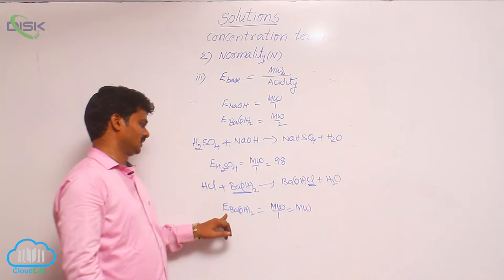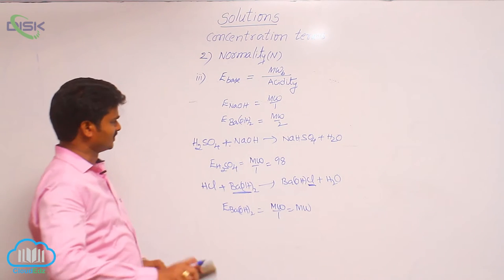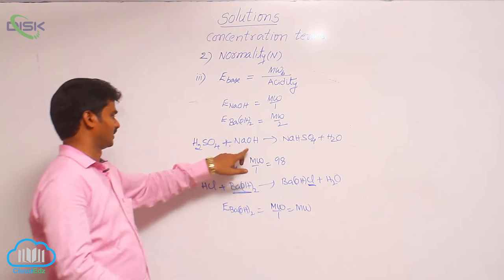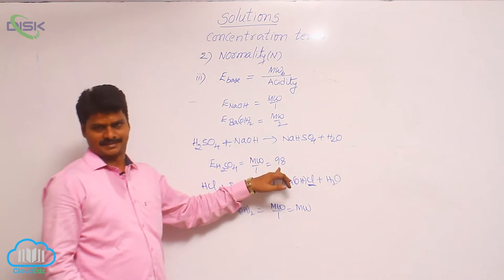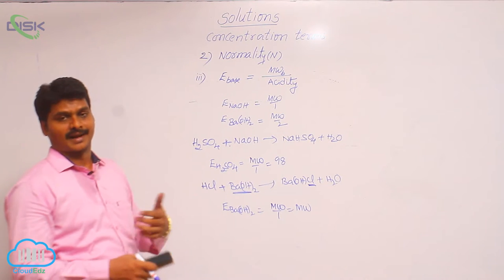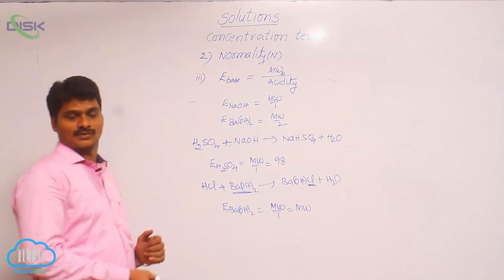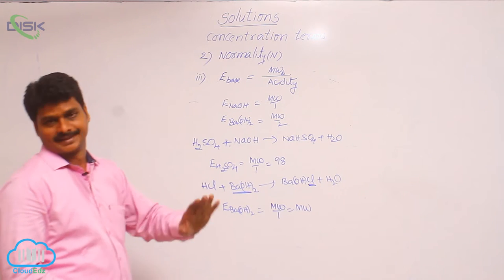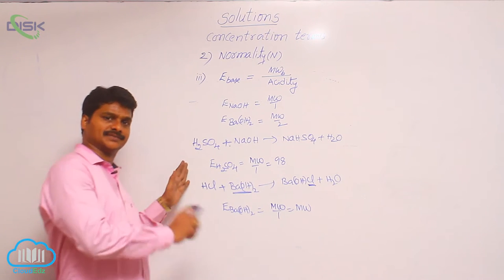So for the HCl and barium hydroxide reaction, equivalent weight of barium hydroxide equals its molecular weight. For H2SO4 and NaOH in the given reaction, equivalent weight of H2SO4 equals 98. Based on the reaction and the condition, equivalent weight changes.